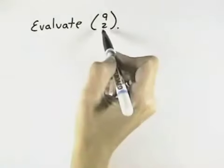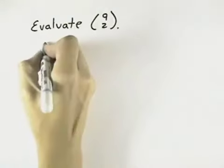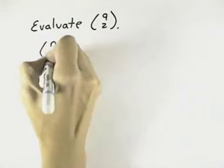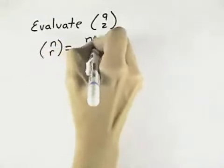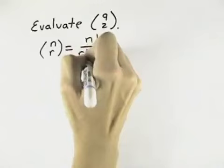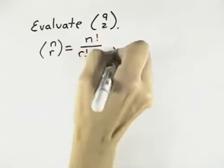We want to evaluate 9 over 2, and what that means is we need to recognize the form it comes from. Because if we have an n and an r, then that will be n factorial over r factorial times n minus r factorial.